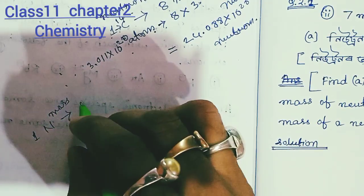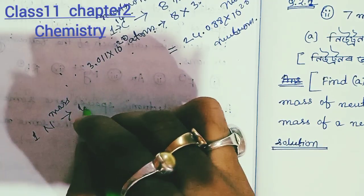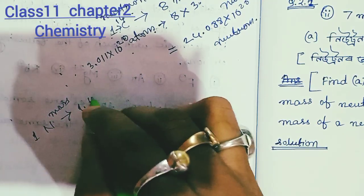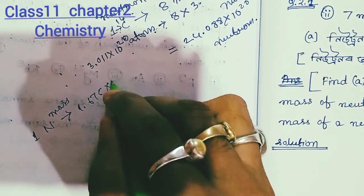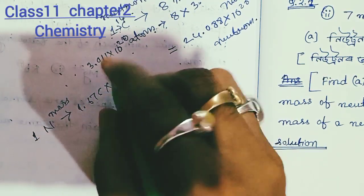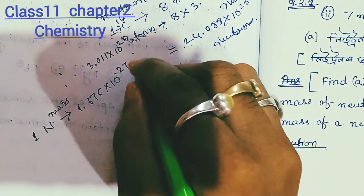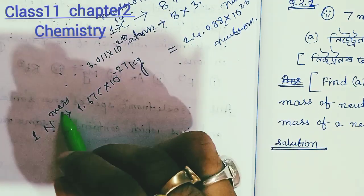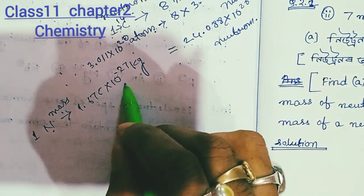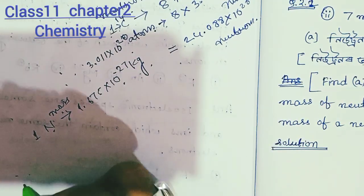I will roughly do this calculation and write it here. So, this neutron mass — how many neutrons? We have 24.088 × 10²⁰ neutrons, so let's find the total neutron mass.